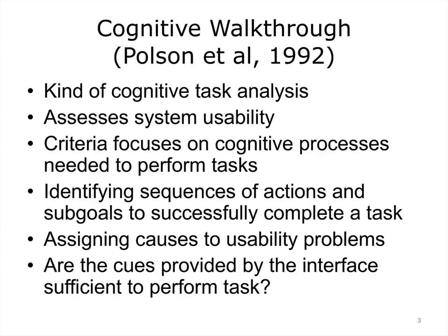The criteria of the analysis focuses on cognitive processes needed to perform tasks. It involves identifying sequences of actions and sub-goals to successfully complete a task, and assigning causes to potential usability problems. The key question is whether the cues provided by the interface are sufficient to perform the task. The alternative is that the user will have to wander through a more complex space, expending greater time, effort, and cognitive resources.